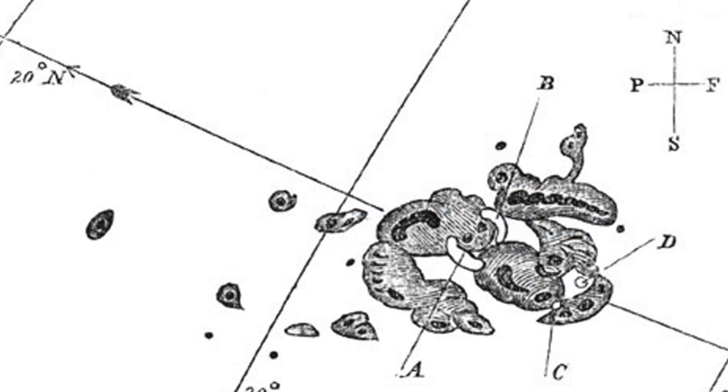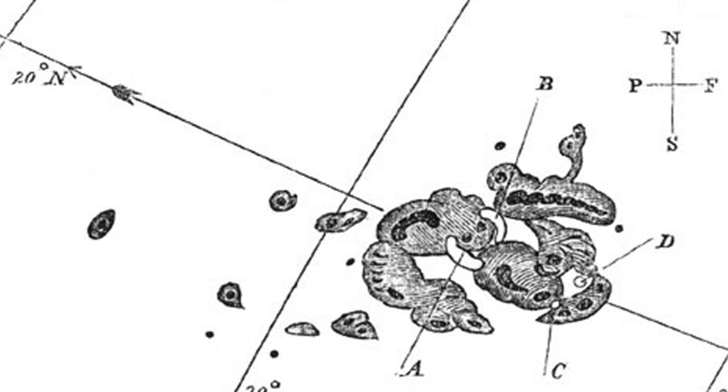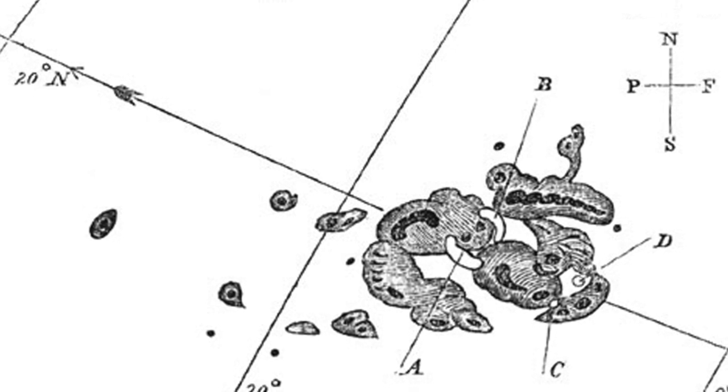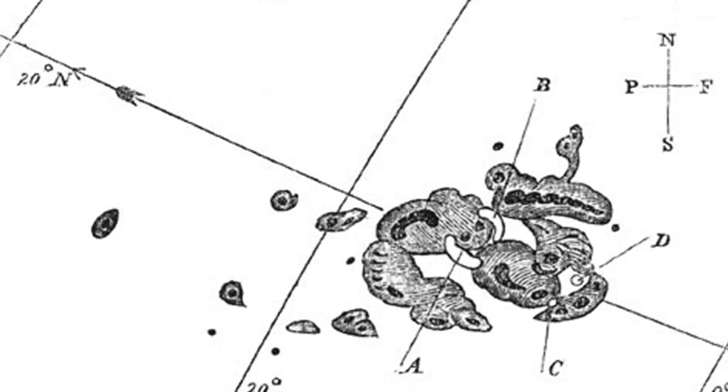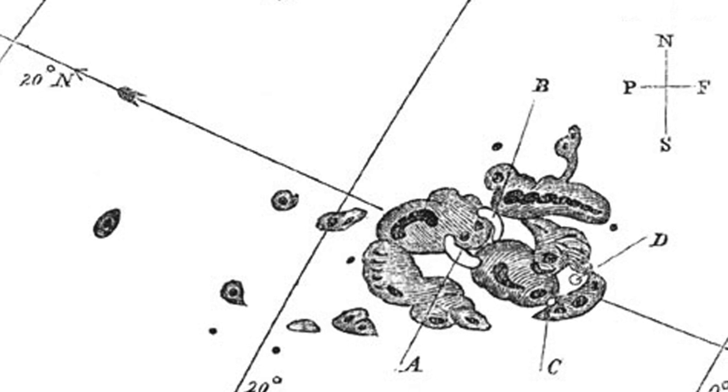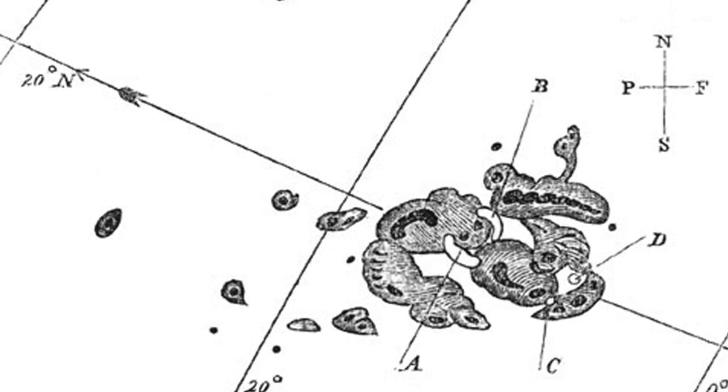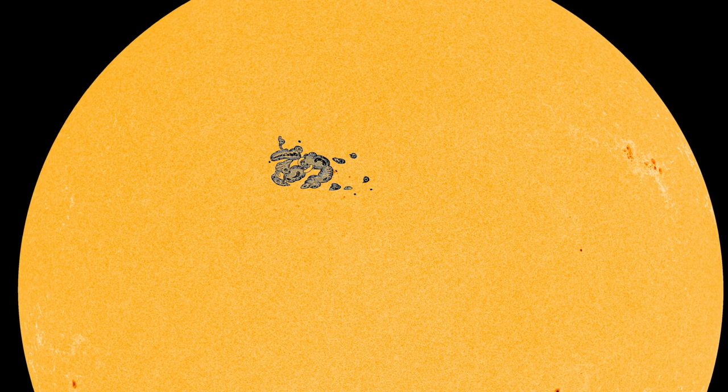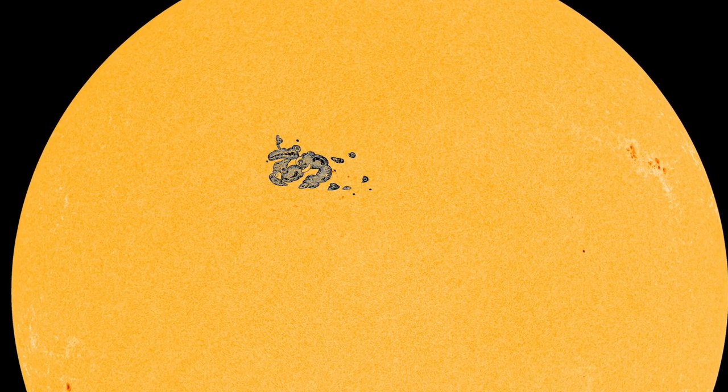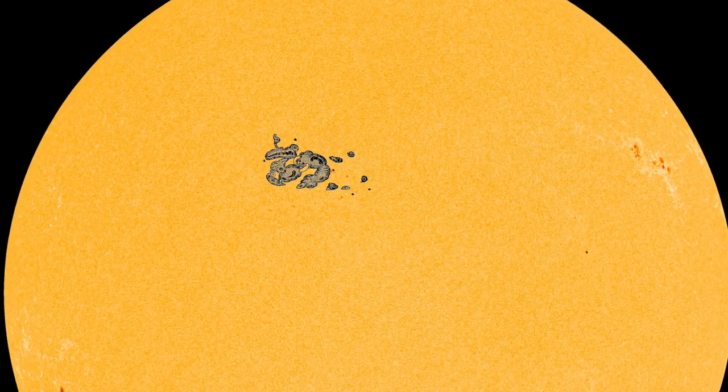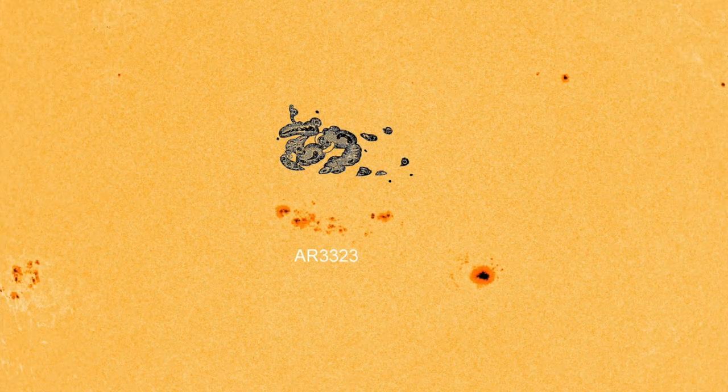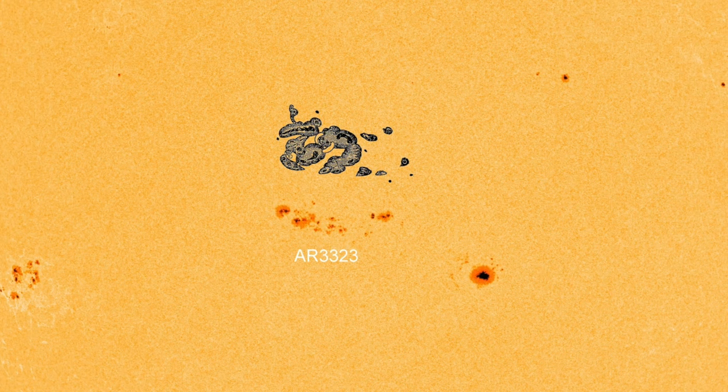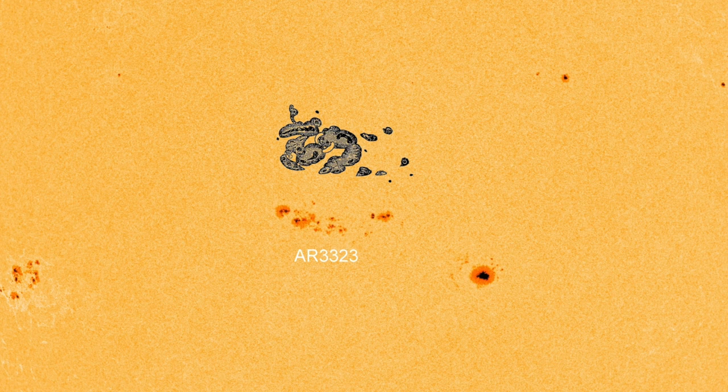As noted by Dr. Phillips, Carrington's sunspot was approximately 9% as wide as the solar disk, and its surface area was 2,300 millionths of the solar disk. Yes, it's big, but since then we have witnessed comparable sunspots, and as recently as June 6th 2023, one was nearly as wide as Carrington's, although the surface area was smaller.